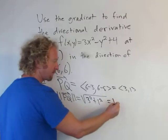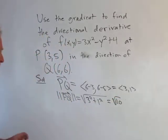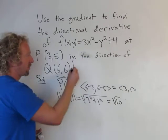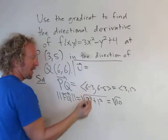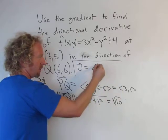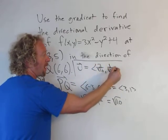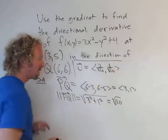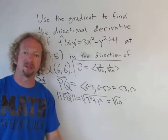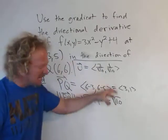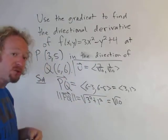The magnitude of PQ is the square root of 3 squared plus 1 squared — that's 9 plus 1, which is 10. So the square root of 10. Our unit vector u is going to be (3 over the square root of 10, 1 over the square root of 10). To turn a vector into a unit vector, you divide by its magnitude — that's called normalizing the vector.